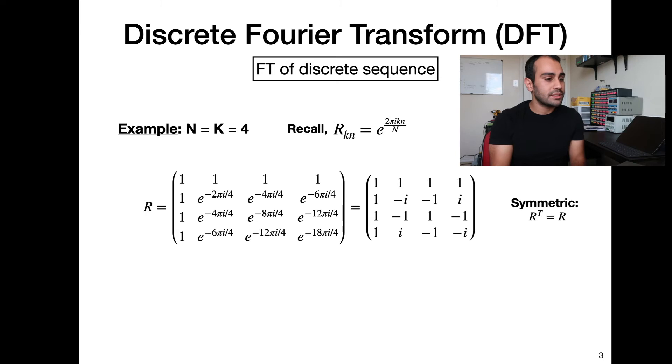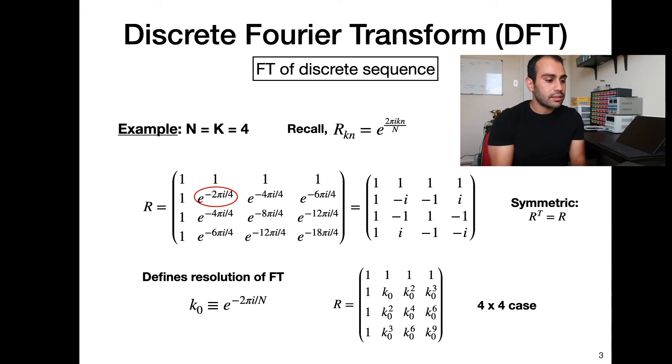Lots of 1s, lots of minus 1s, lots of i's and minus i's. Just looking at it, this matrix is symmetric, which means that if you were to swap the rows and columns, it would be the same matrix as you started with. So that's pretty nice. And then this is a special element in the matrix. This element defines the resolution of the discrete Fourier transform. We can call it something special like kn, and then we can write any Fourier matrix in terms of this kn.